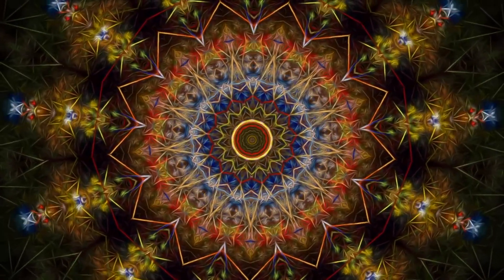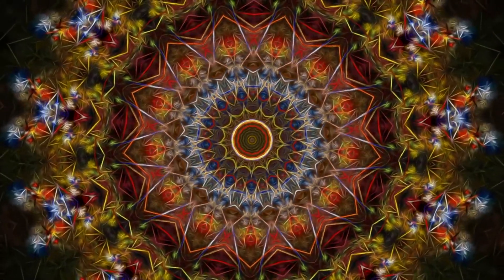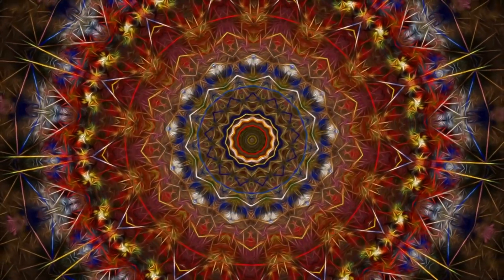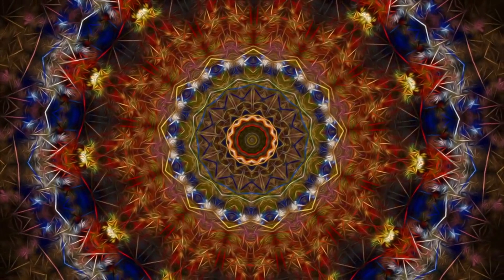The fourth is Pranamayakosh, the sheath of Prana, the vital life force, the energy that operates through the five work organs and systems inside the body, including the blood vascular system, the respiratory system, and the nervous system, through which Karmas are performed.